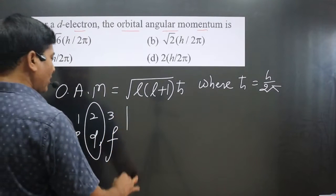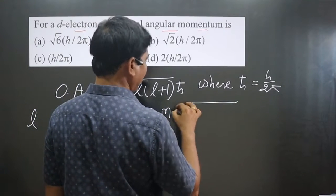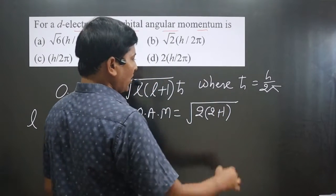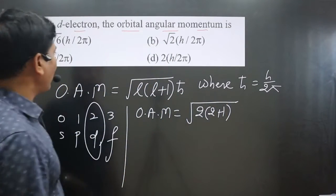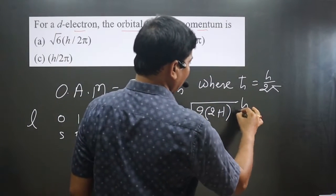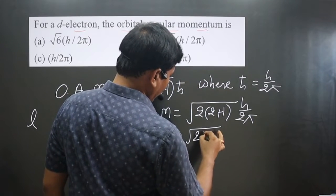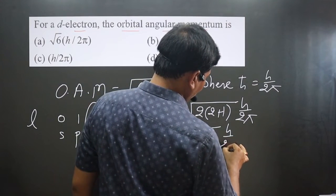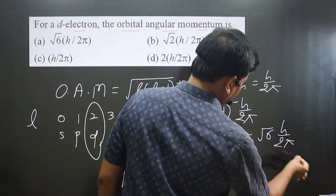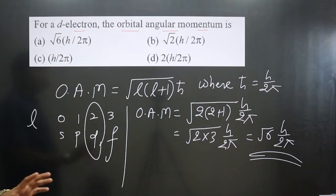Now we calculate: orbital angular momentum equals under root of l(l+1) times h-bar. Substituting l equals two: under root of 2(2+1) times h upon 2π. Simplifying, we get under root of 2 multiplied by 3, which is under root 6, times h upon 2π.